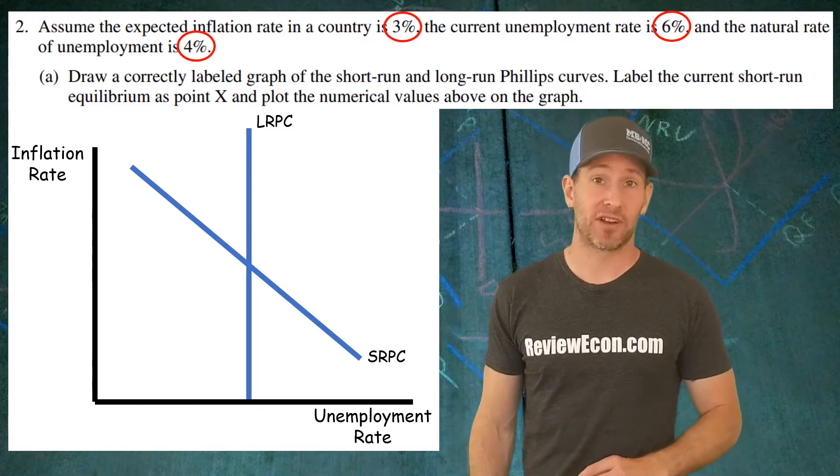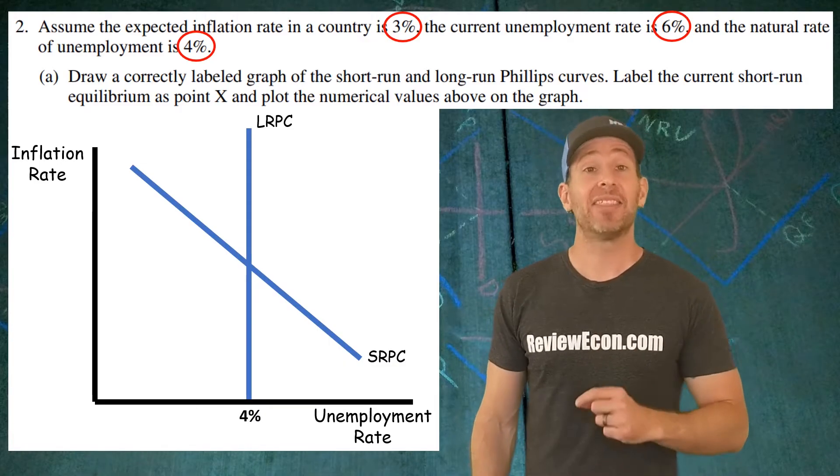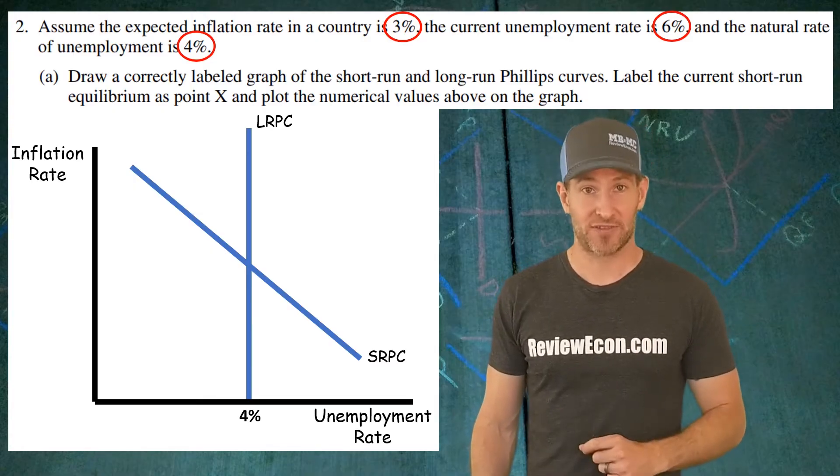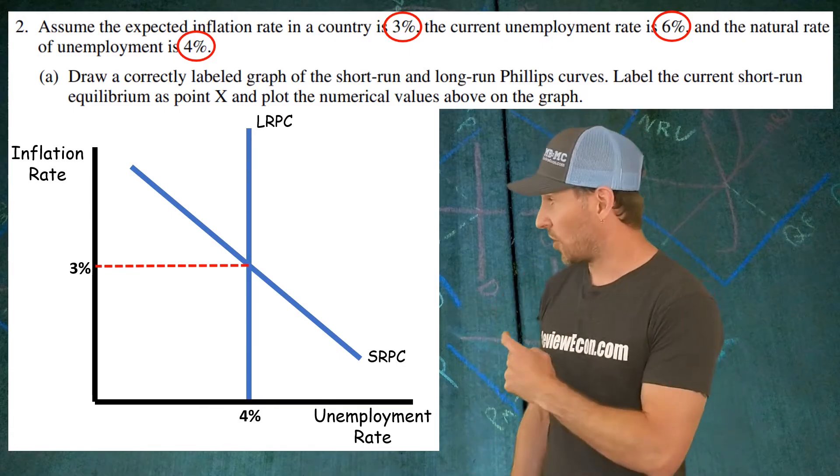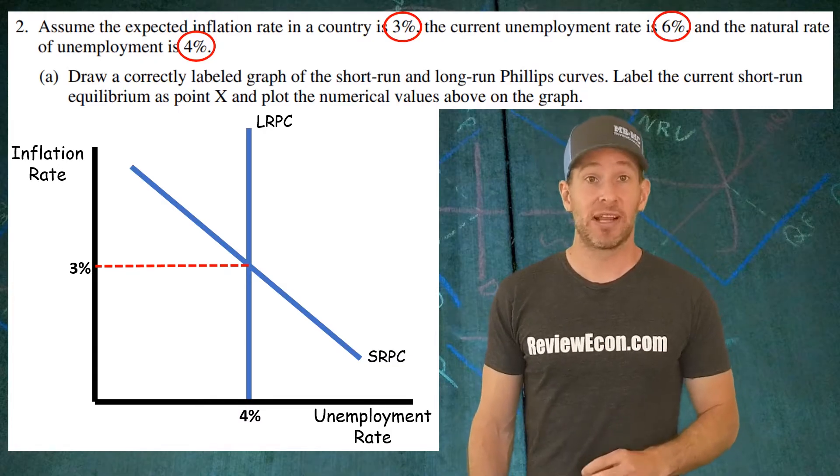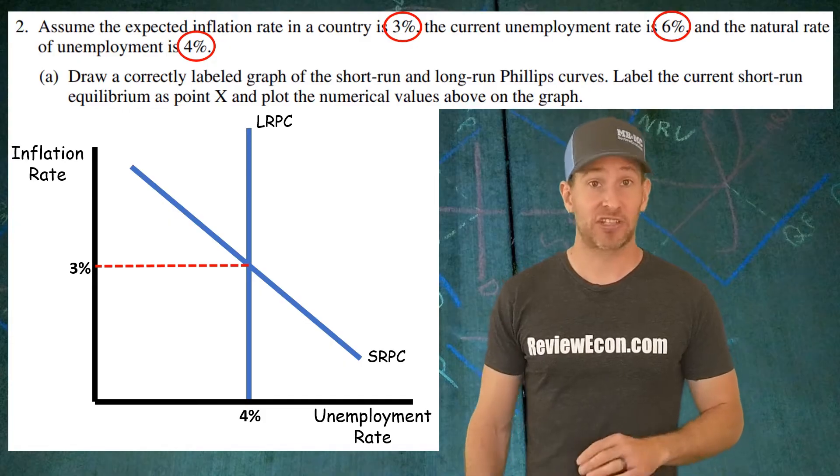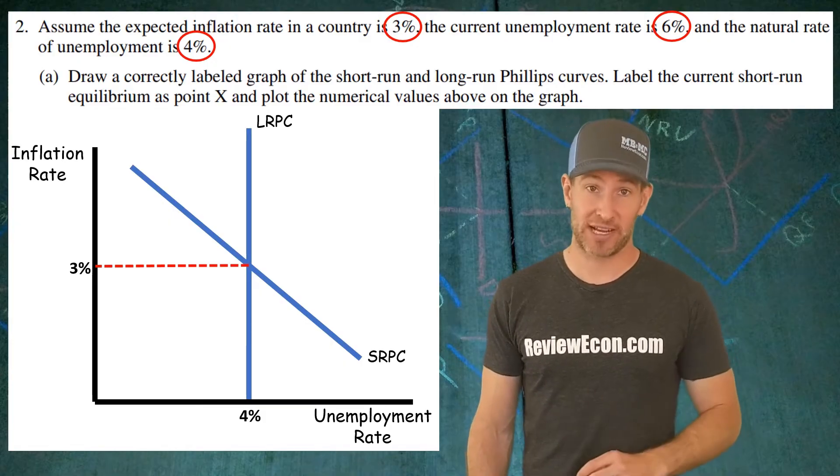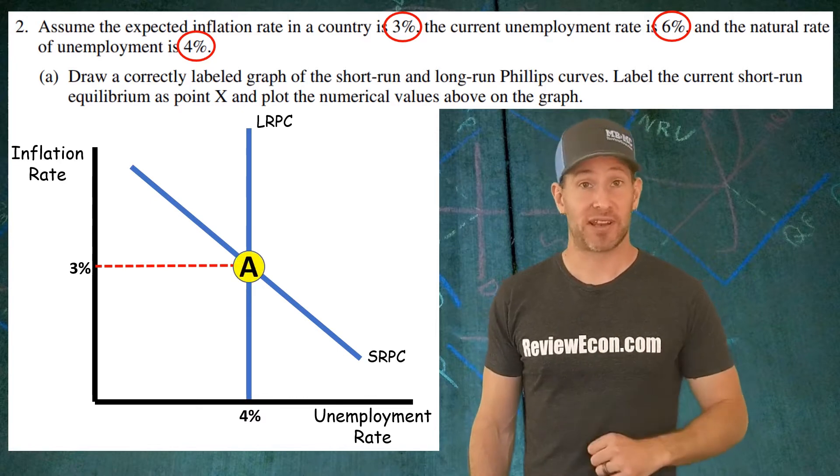Here we know that the natural rate of unemployment is 4%, so go ahead and label that in. At the intersection between the short run Phillips curve and the long run Phillips curve, we find the expected rate of inflation. That is 3%. Go ahead and label that here as well.